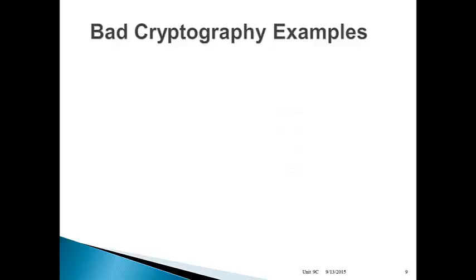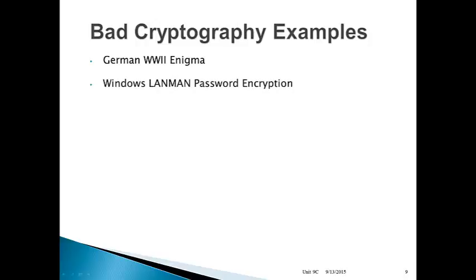Some bad cryptography examples from history. Germany in World War II had this wonderful machine called the Enigma — this was the beginning of modern cryptography. The Enigma was supposed to be unbreakable, but it was in fact broken. Some recent movies have discussed and featured this machine. Windows — the early LAN Manager password encryption for Windows that is still sometimes around for legacy services — had very serious cryptographic flaws that led an early hacker group to publish one of the first password cracking utilities. And in wireless networking, WEP encryption was so badly designed it had to be scrapped. If you're still using it, don't — you're almost better off using clear text.